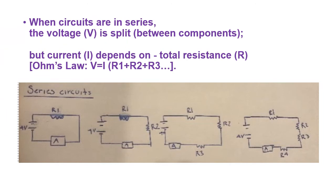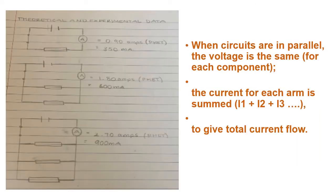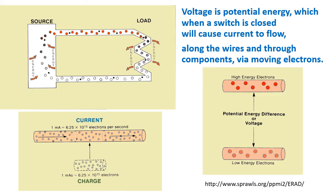When circuits are in series, the voltage is split and the current depends on total resistance. When circuits are in parallel, the voltage is the same and the current for each arm is summed to give total current flow.